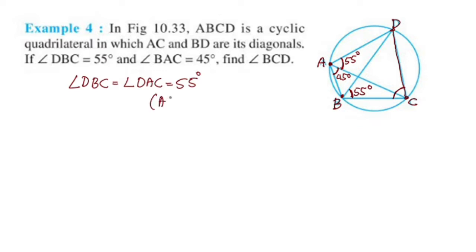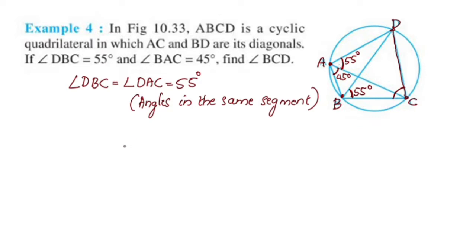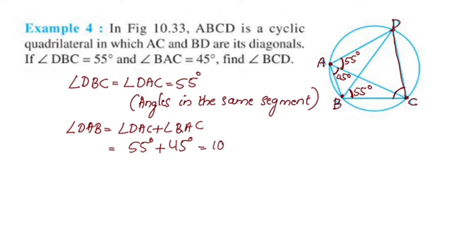Angle DBC equals angle DAC by the same segment theorem. So angle DAB equals angle DAC plus angle BAC, which is 55 degrees plus 45 degrees, giving us 100 degrees.